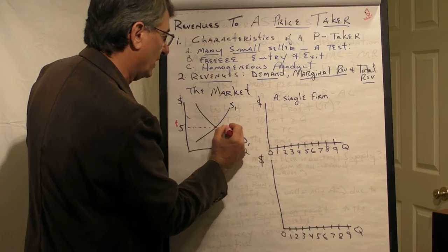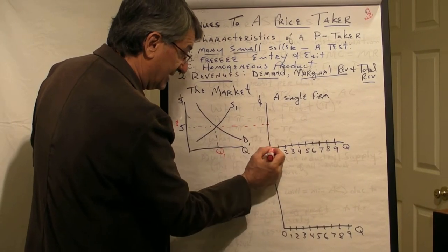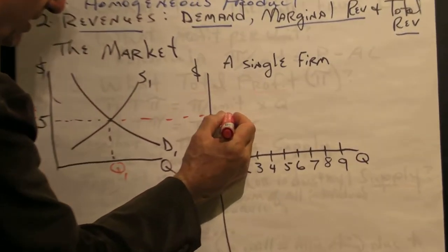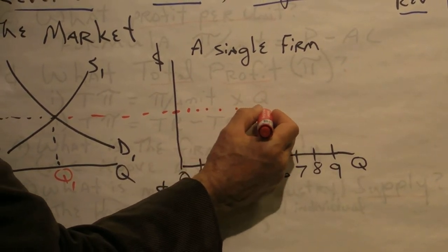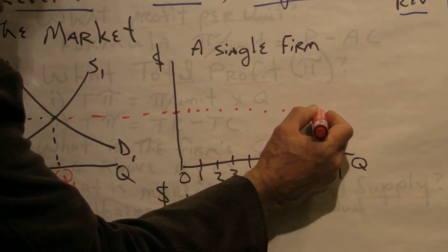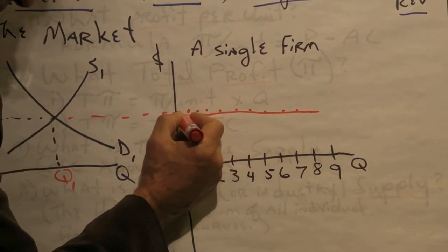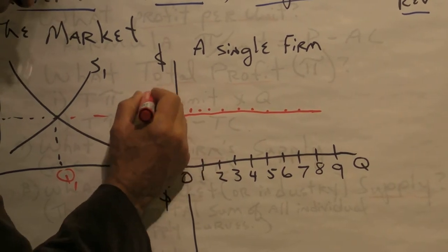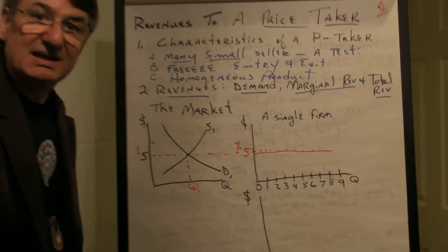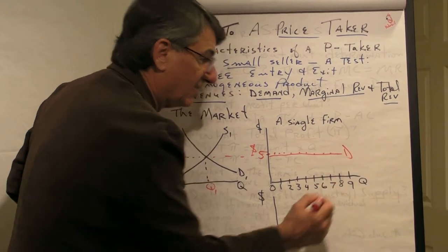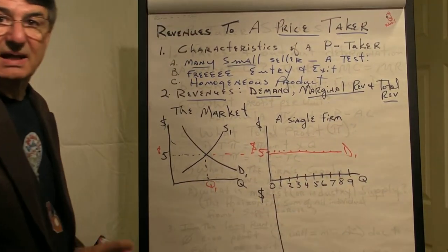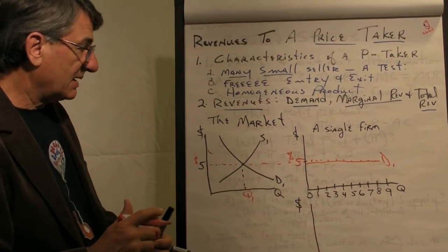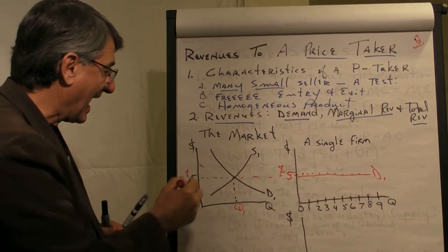this firm has the choice to sell zero units, one, two, three, four, five, as many as it wants to or is capable of producing at the market price of $5 per bushel. So this, then, is the demand curve for a price taker firm. They can sell all they're capable of producing at the market price.